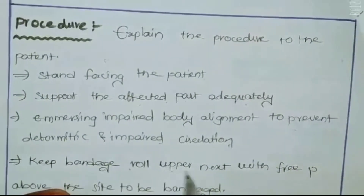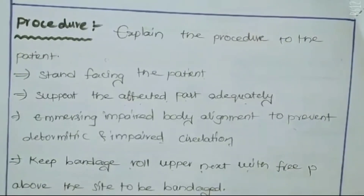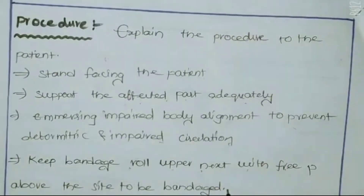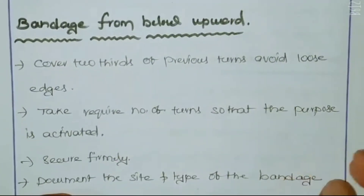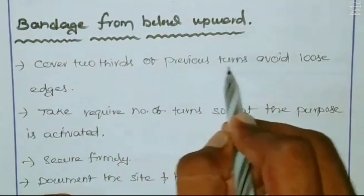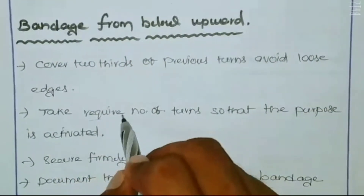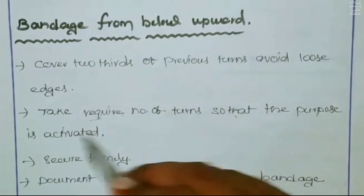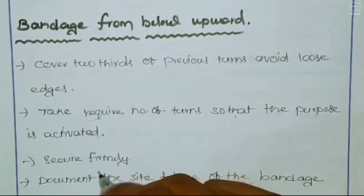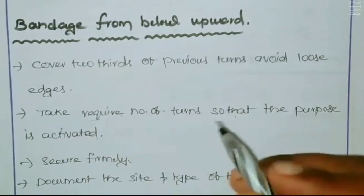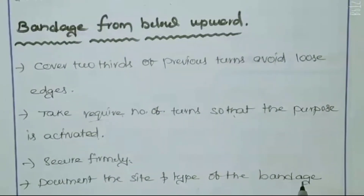Keep the bandage roll upper and above the side to be bandaged. Bandage from below upward, covering two-thirds of the previous turns. Avoid loose edges. Take the required number of turns so that the purpose is achieved. Secure firmly and document the site and type of the bandage.